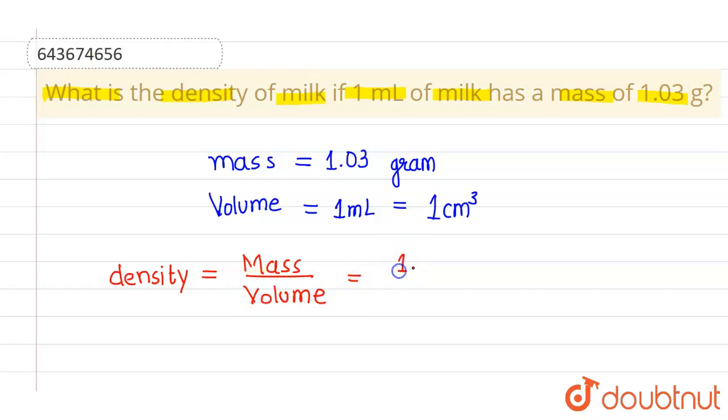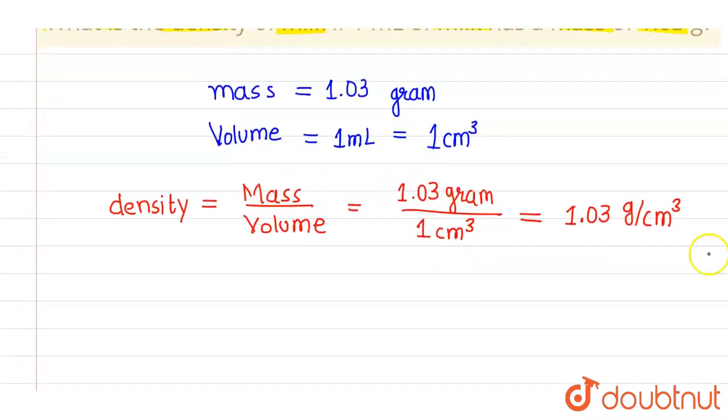So the given mass in this particular equation is 1.03 grams, and the given volume is 1 centimeter cubed. So density comes out to be 1.03 grams per centimeter cubed.